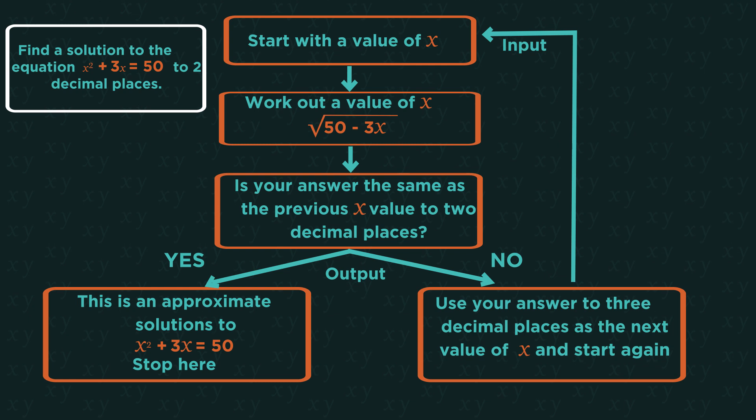So if we are trying to find the solution for this equation to three decimal places, choose a starting value so x is 5 and put that into the cycle. We get x is 5.916 etc. This doesn't equal our starting value of 5.